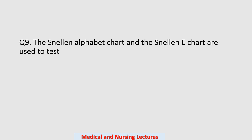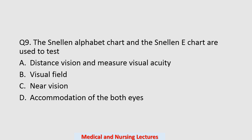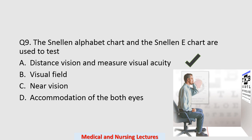Question number nine: the Snellen alphabet chart and the Snellen E-chart are used to test — options are distance vision and major visual acuity, visual field, near vision, or accommodation of both eyes. The correct option is option A: distance vision and major visual acuity.